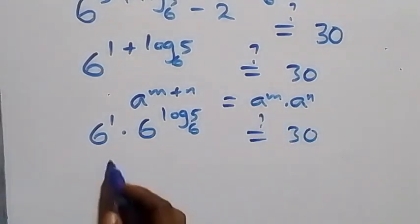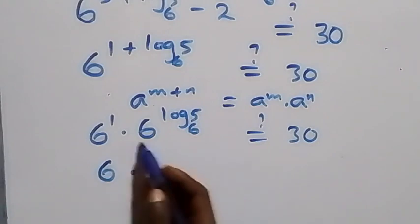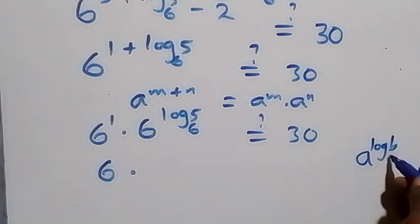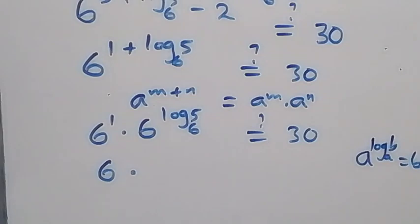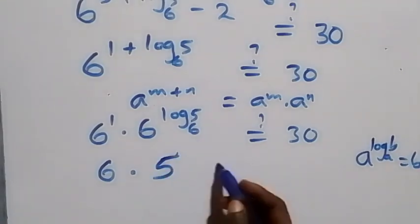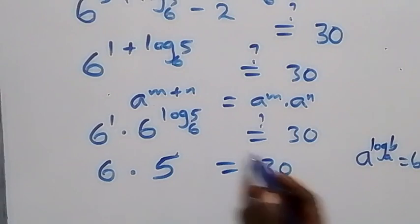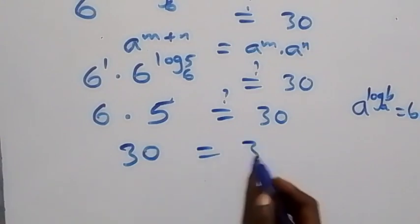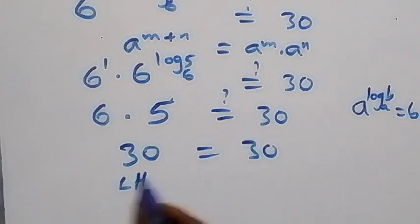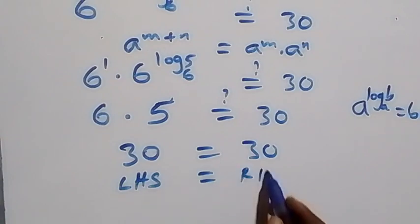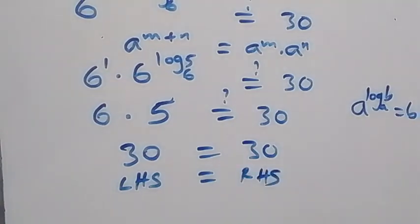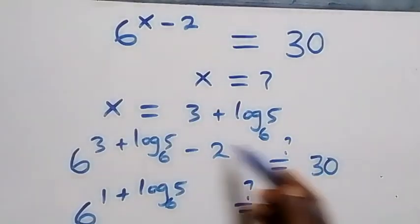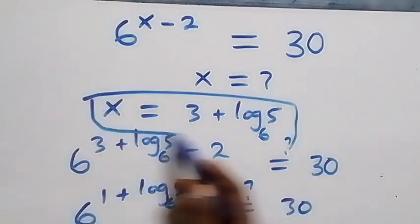This follows the law of indices: a raised to power m plus n equals a raised to power m times a raised to power n. So we have 6 raised to power 1 times 6 raised to power log₆5. Now 6 raised to power 1 is 6, and using the identity a raised to power log_a(b) equals b, we get 5. So 6 times 5 equals 30, which equals 30 on the right-hand side. Left-hand side equals right-hand side, hence x equals 3 plus log₆5 satisfies the given problem.